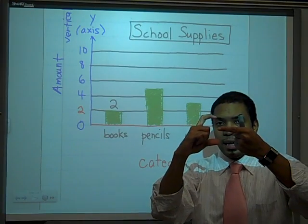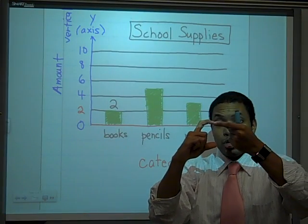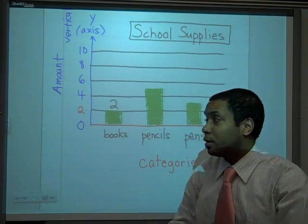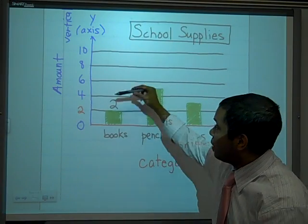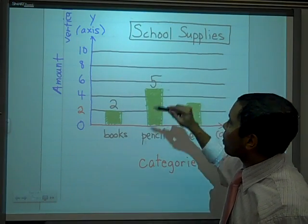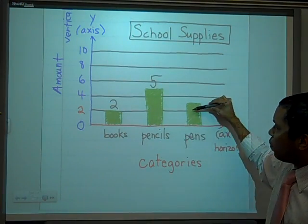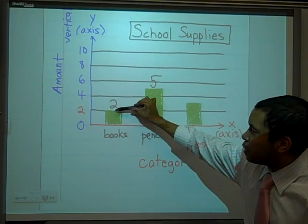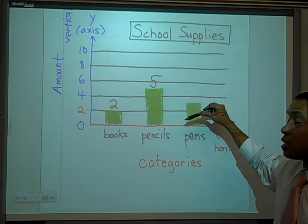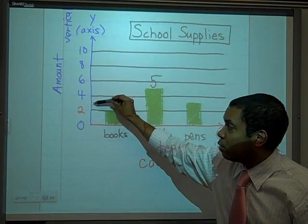the scale in this case is each line is going to be worth two. In between, halfway in between, each line is going to be worth one more than the bottom line. So the bottom line is four. One more than four is five. This one right here, we have pens going in between the lines of two and four. It looks like it's right in the middle. So it's going to be one more than two, which is three.